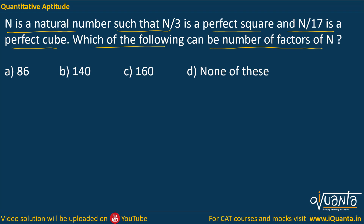You all must know how to calculate the number of factors of a given number. For example, if I say 250, first you write down its prime factorization: 2 × 5³. To find the number of factors, increase each power by 1 and multiply them. So (1+1)(3+1) gives us 8 factors.